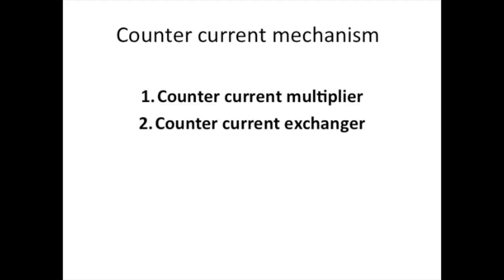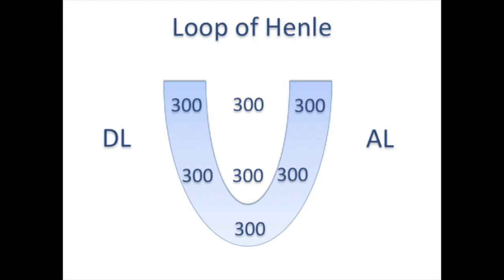Let's learn today about counter current mechanism. It has two parts: counter current multiplier and counter current exchanger. Initially we will look into the counter current multiplier. Now let us consider an illustration of loop of Henle. Here we have descending limb, ascending limb, and interstitium.